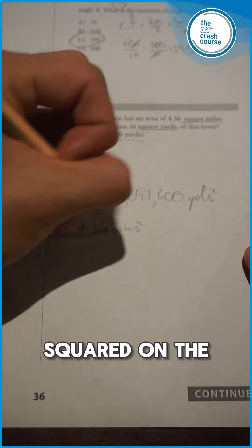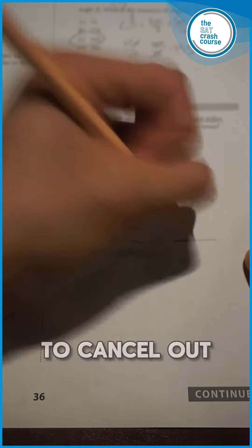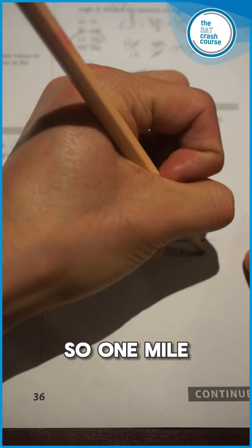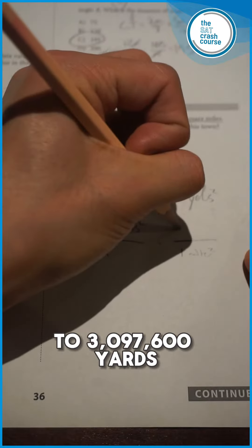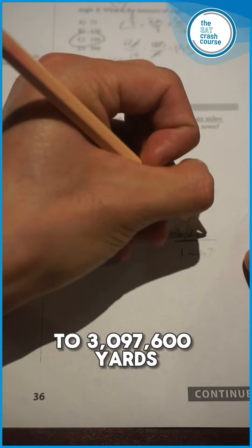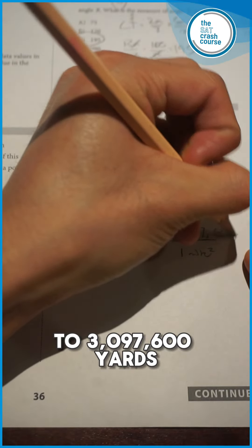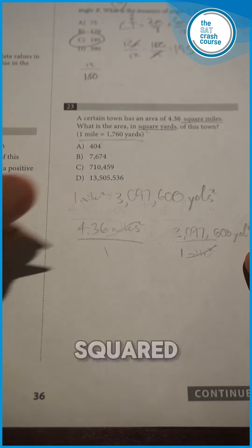We put miles squared on the top and then we put miles squared on the bottom to cancel out. So one mile squared is equal to 3,097,600 yards squared. Now we cancel out the miles squared.